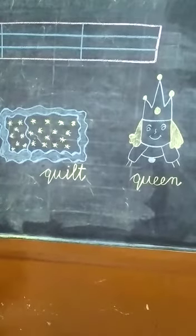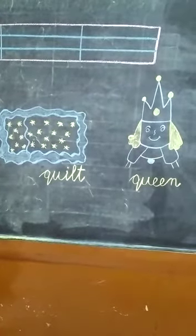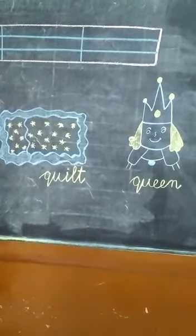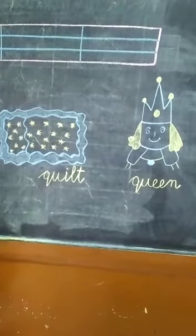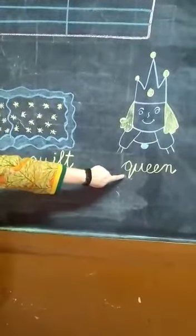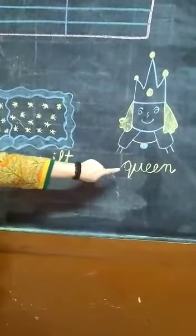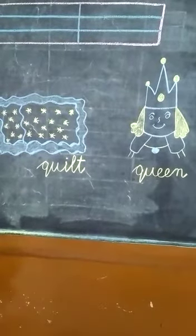Good morning my dear children. Hope you all are fit and fine. Students, today in English written we will do Q for Quilt and Q for Queen. Students, first of all, write down today's date and let us start today's work.